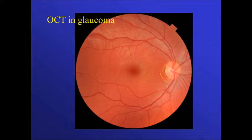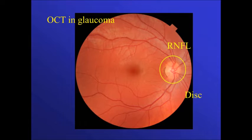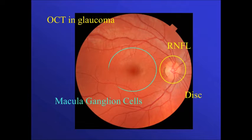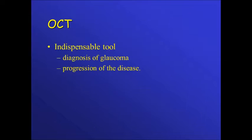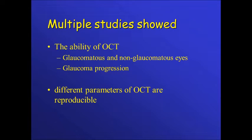OCT can help in the management of glaucoma as it gives us information regarding the retinal fiber layers around the disc, the disc itself, together with the ganglion cells within the macular area. OCT is an indispensable tool for the diagnosis and detection of progression of glaucoma. Multiple studies have shown the ability of OCT to differentiate between glaucomatous and non-glaucomatous eyes and to demonstrate glaucoma progression. The different parameters of OCT are reproducible.